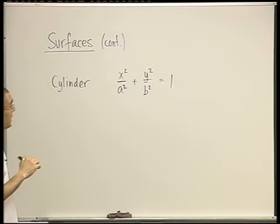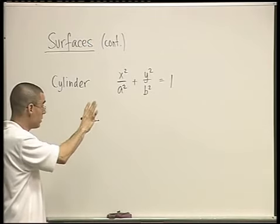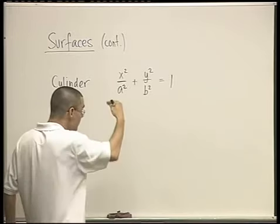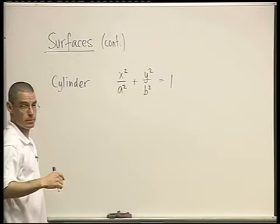And why is that? Note that there's no z here. Do you see a z? No z, right? So for any z, we get the exact same section, an ellipse. Do you agree?